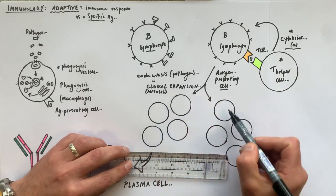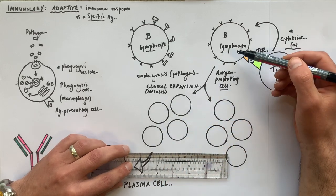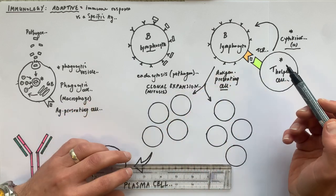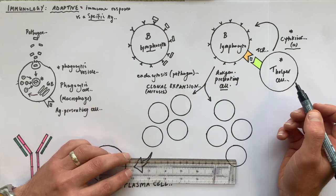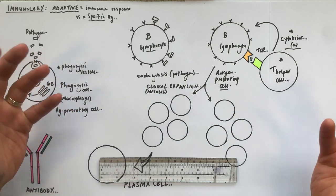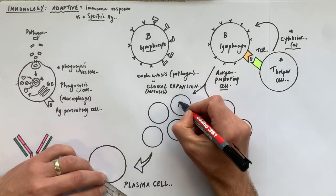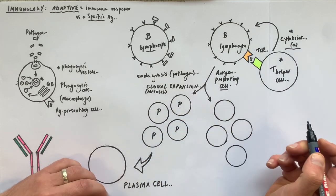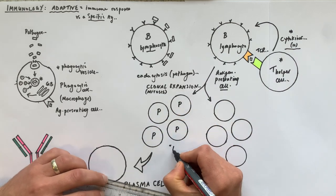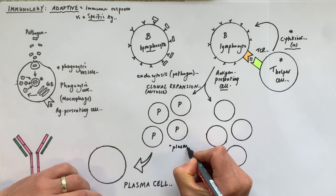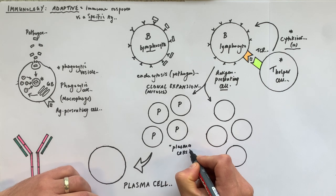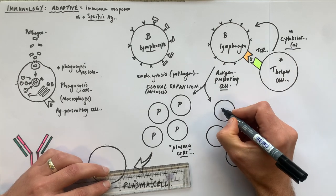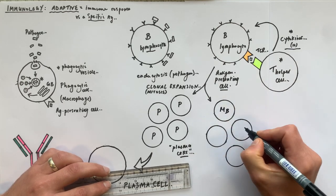All these genetically identical daughter cells from the original B lymphocyte are clones — hence the name clonal expansion via mitosis. Half of these daughter cells will become plasma cells, and the other half will become memory B cells.